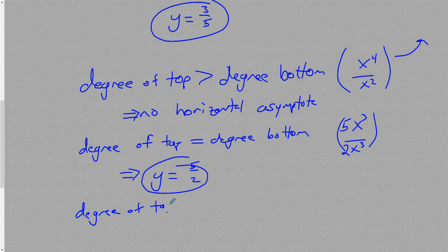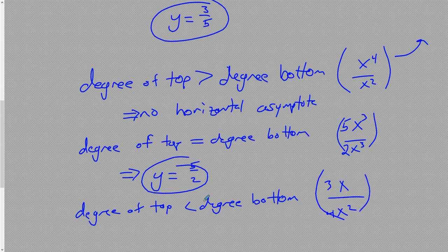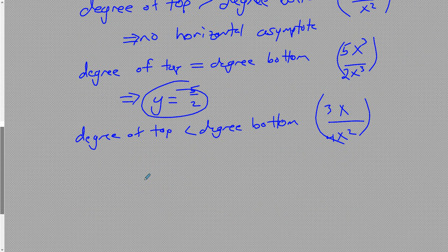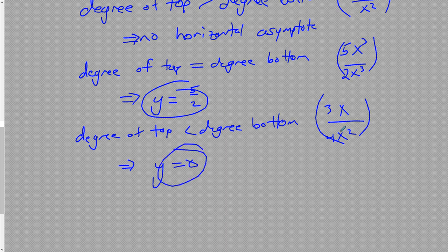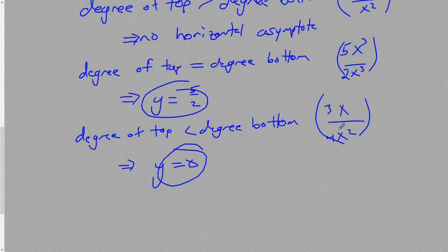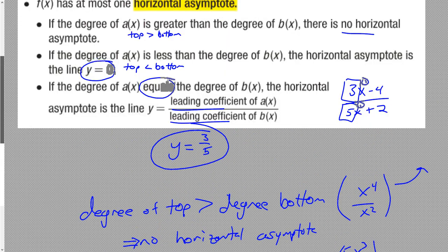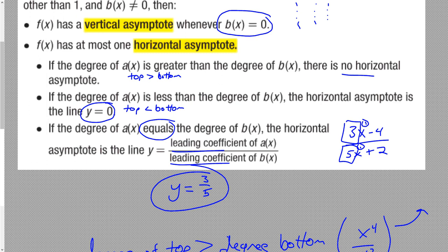And finally, if the degree of the top is less than the degree of the bottom — like x over x squared — our horizontal asymptote is 0, because as the bottom gets really, really big much faster than the top, we're getting closer and closer to 0 since we're dividing by an enormous number. So pause, get these three options in your notes, and then we'll put them into practice.